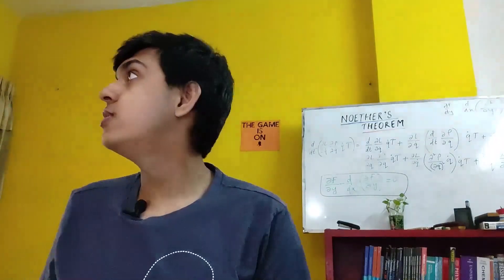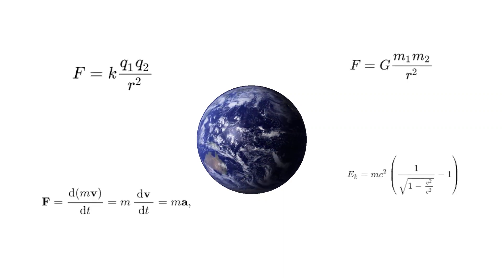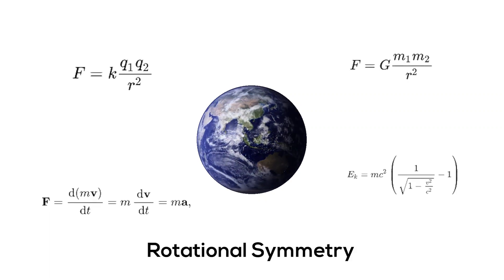No matter how you spin this fully spherical earth, you couldn't change the physics of it. The forces acting on it, its energy, it would all be the same. This object has continuous rotational symmetry.